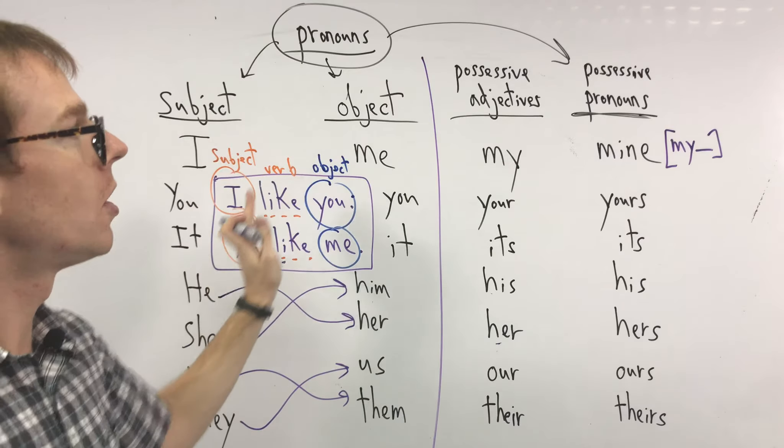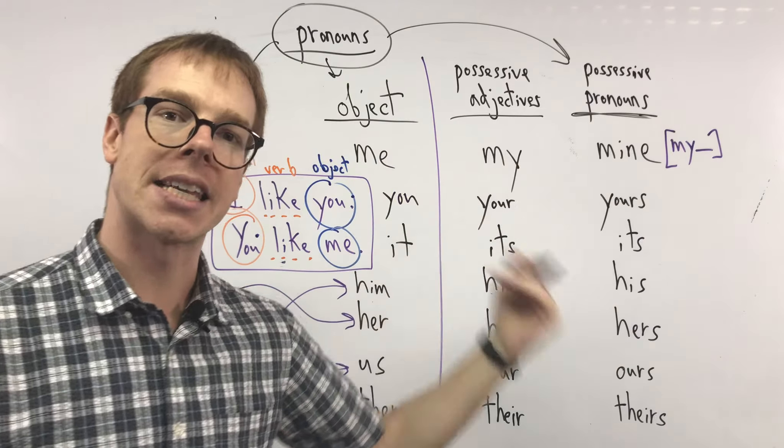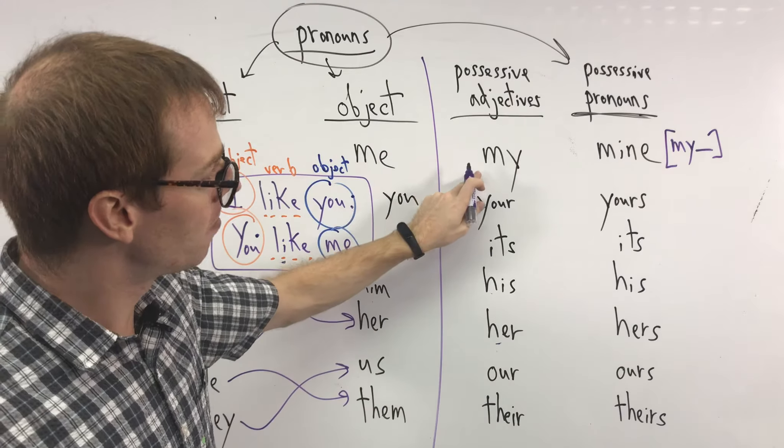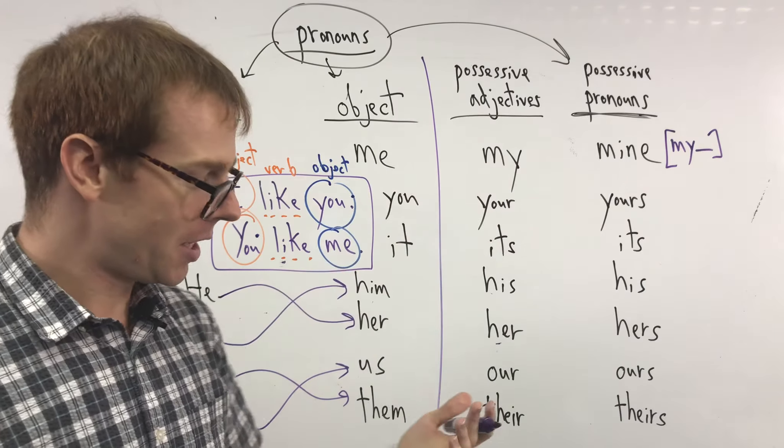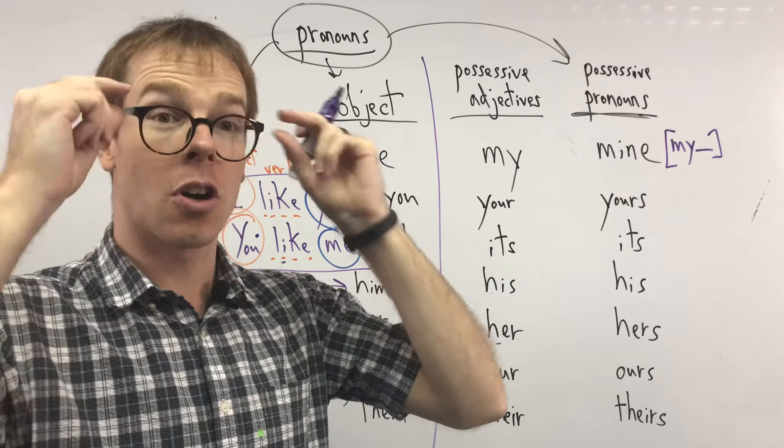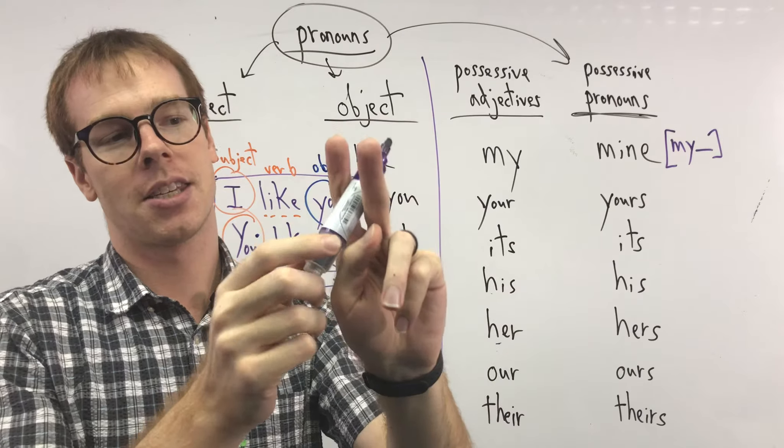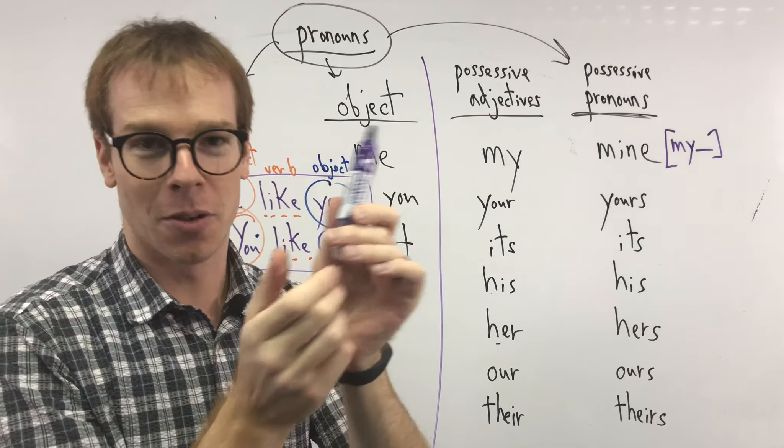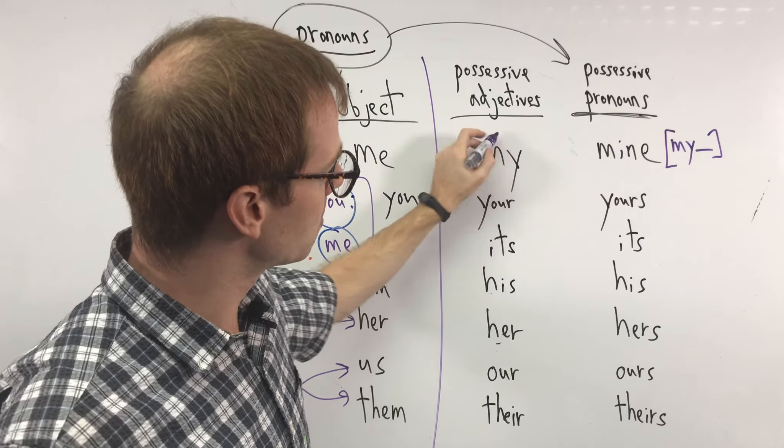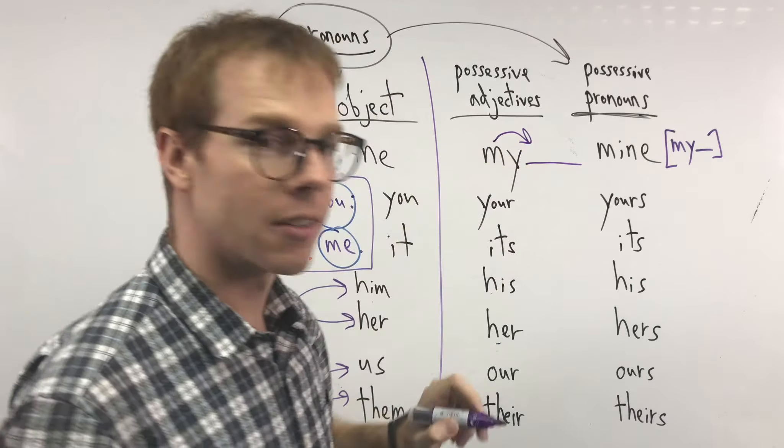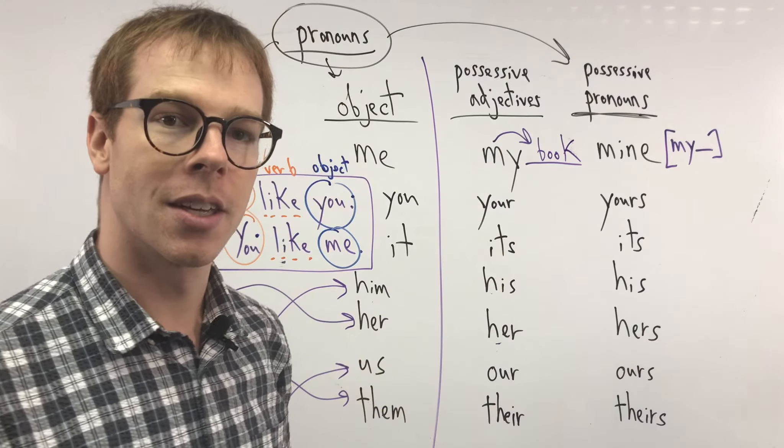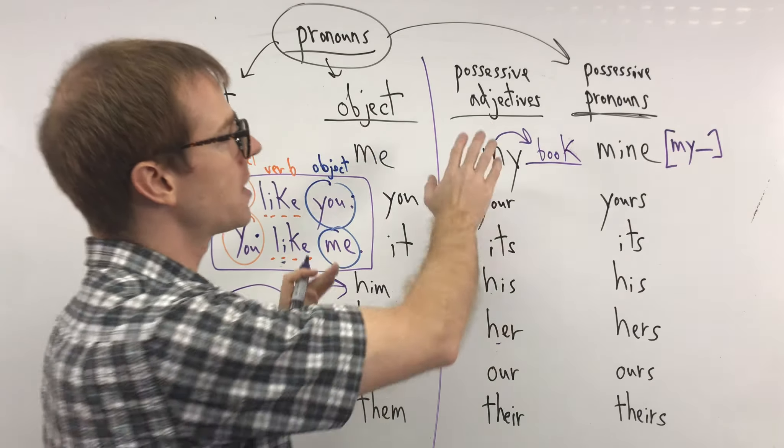Now we're going to move on to what we call possessives. Possessives you've also seen before. Possessives like my. This is my watch. These are my glasses. This is my marker. Don't tell my boss I'm taking this one home. This is mine. This is my blank. For you, maybe at school you have my book. So that's our basic possessive.